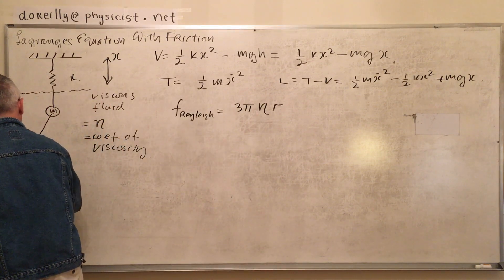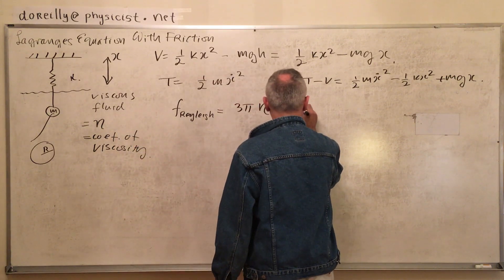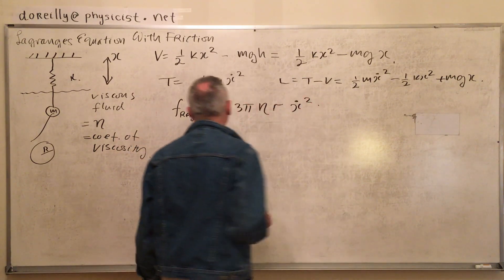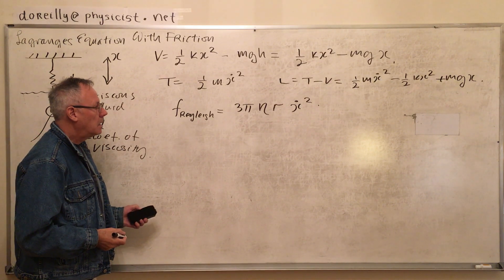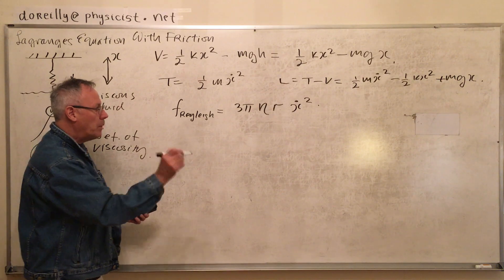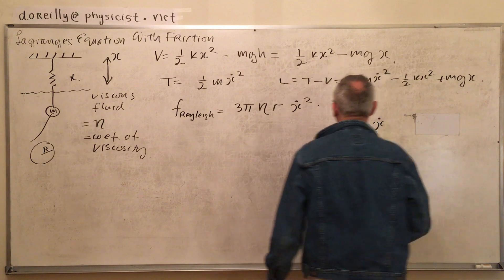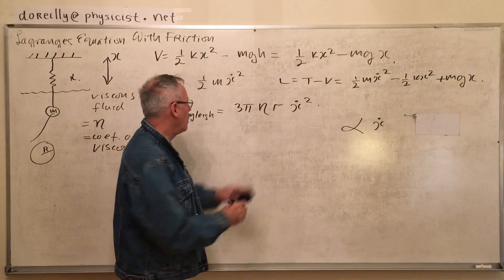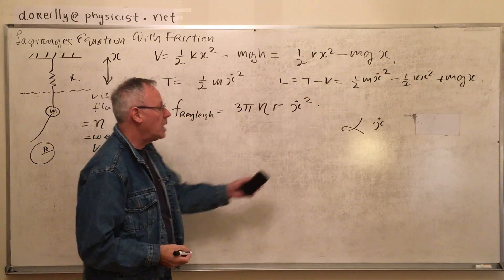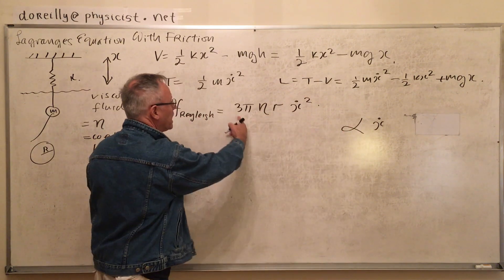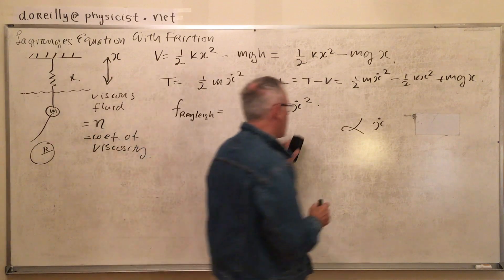In the case of viscous fluid, we want to end up with a force that's proportional to the velocity. When we take the derivative, we're going to get 6 pi eta r x dot, which is proportional to velocity, which is what we want. I'm going to replace all these terms with lambda x dot squared for our problem.